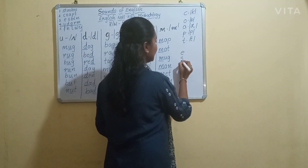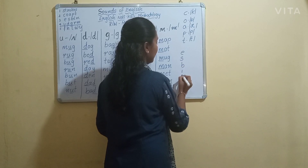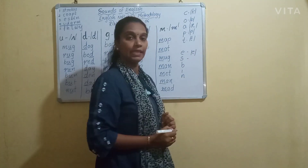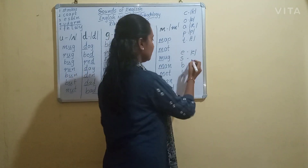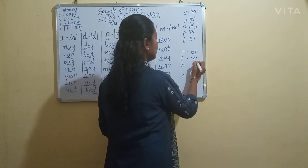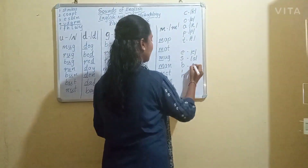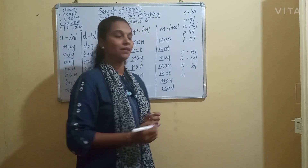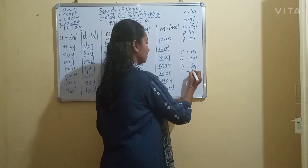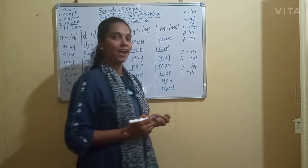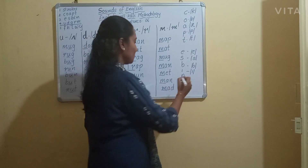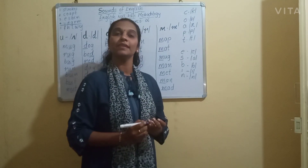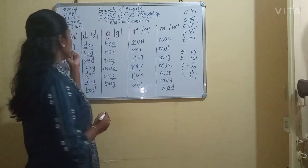The next cluster is E-S-B-I-N. E says A, S says S, B says B, I says E, and N says N.